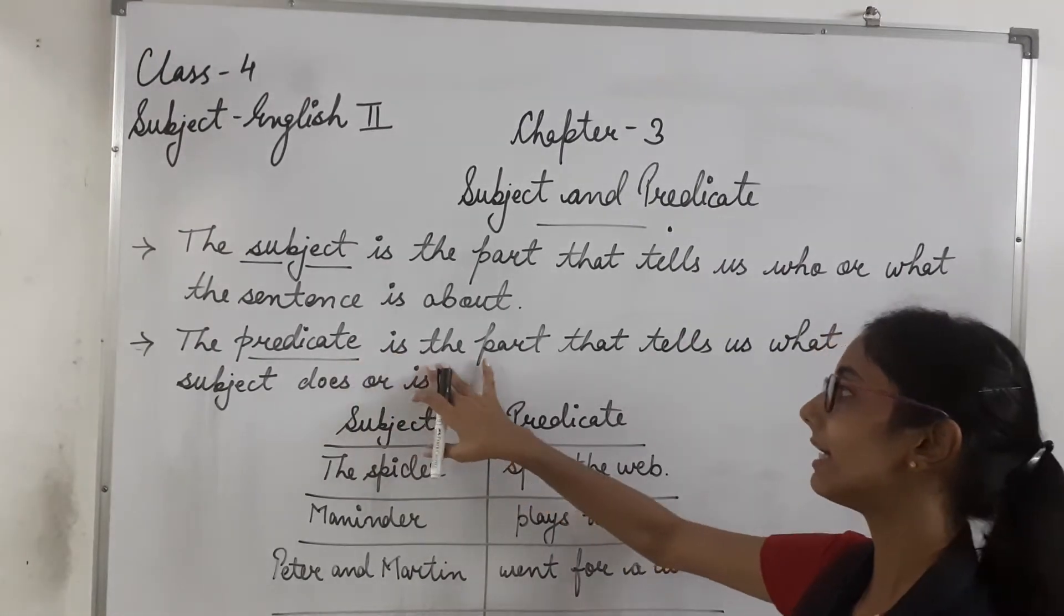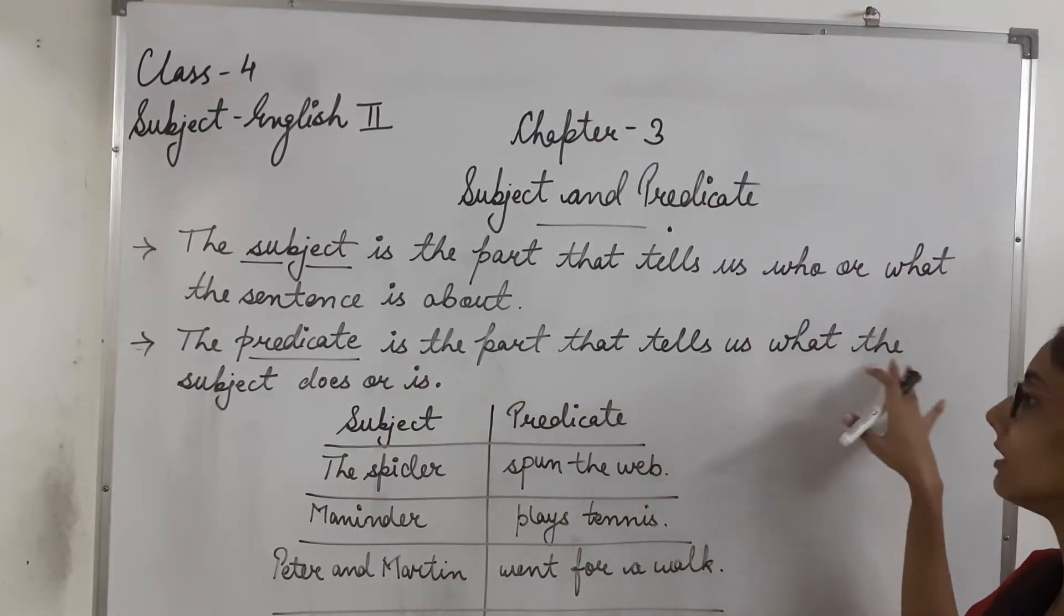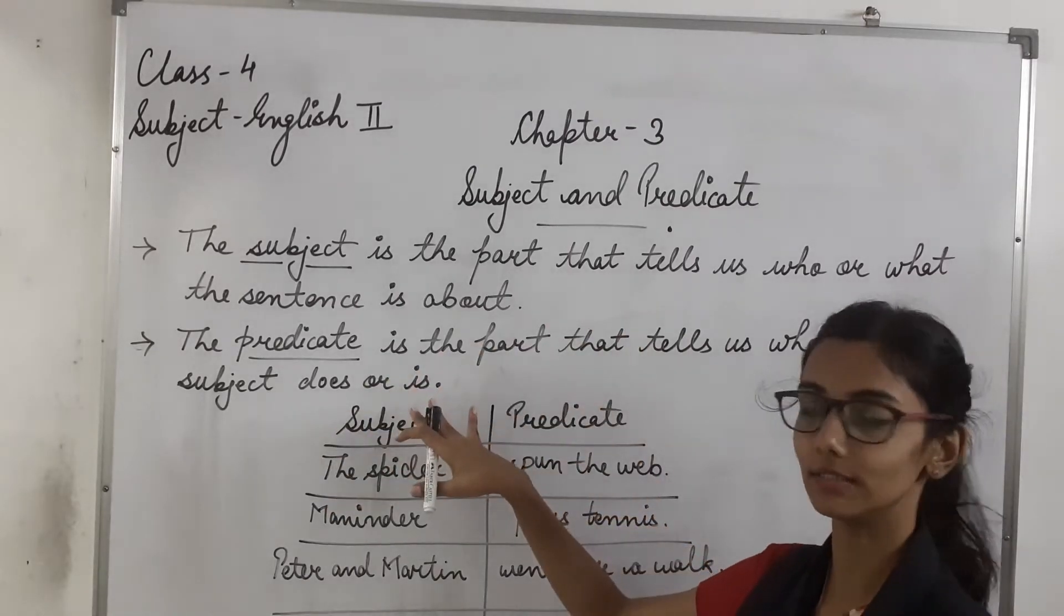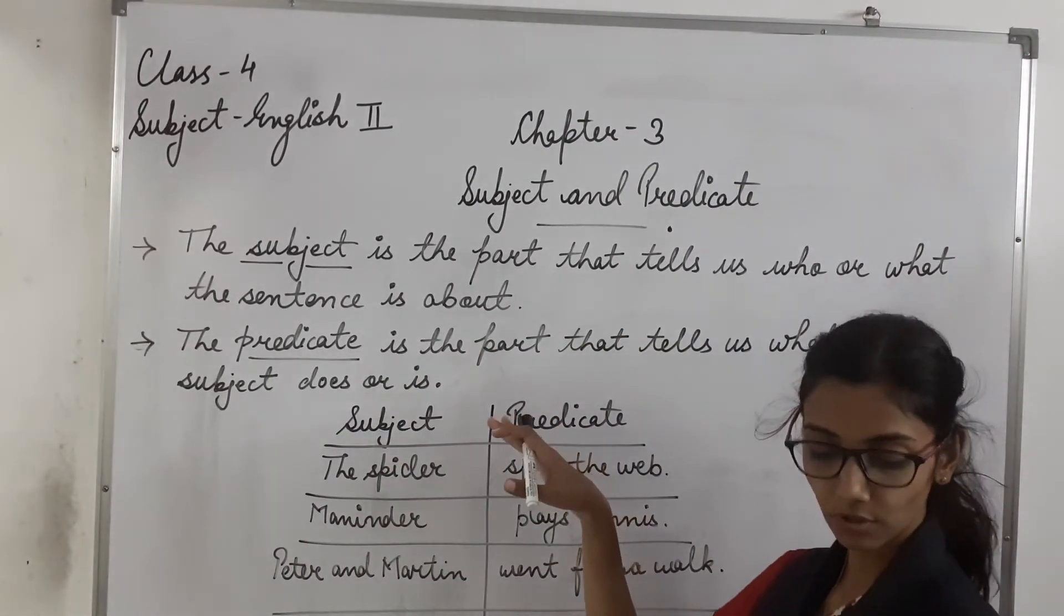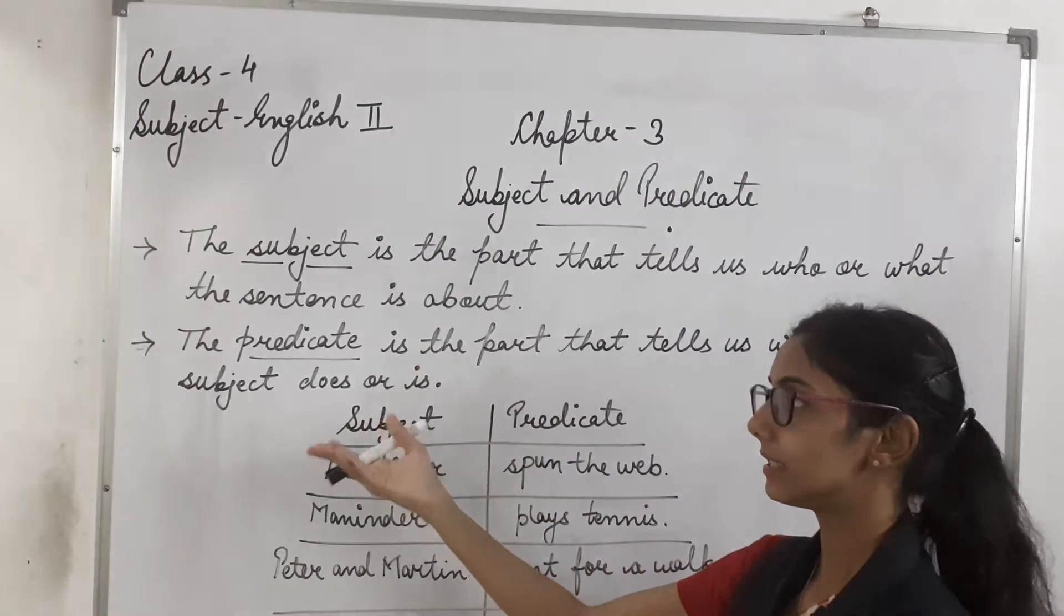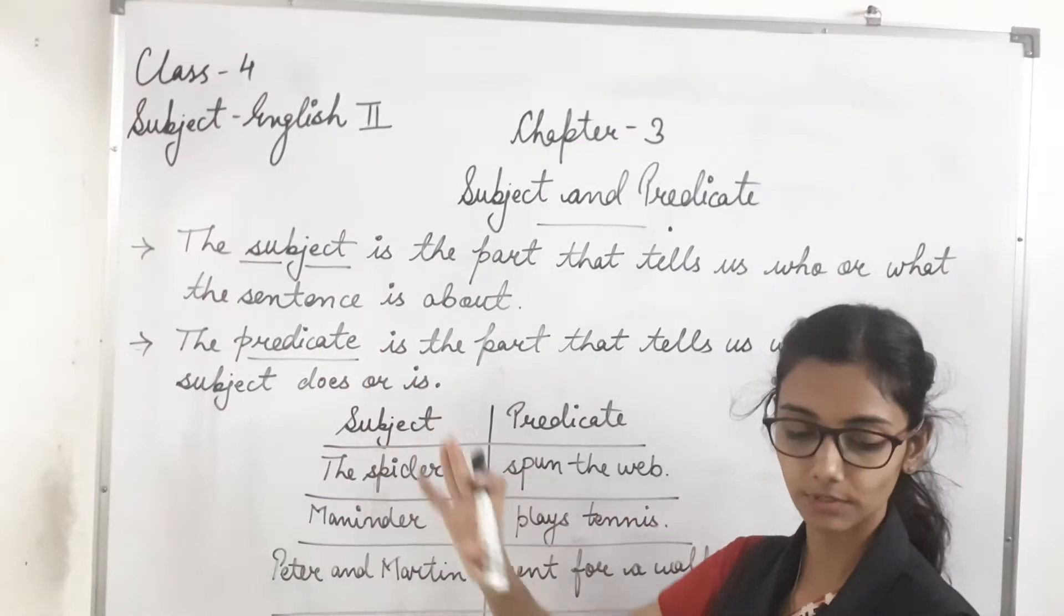So the predicate is the part that tells us what the subject is doing or is. Toh jho subject karta hai usse hum predicate bolte hain.